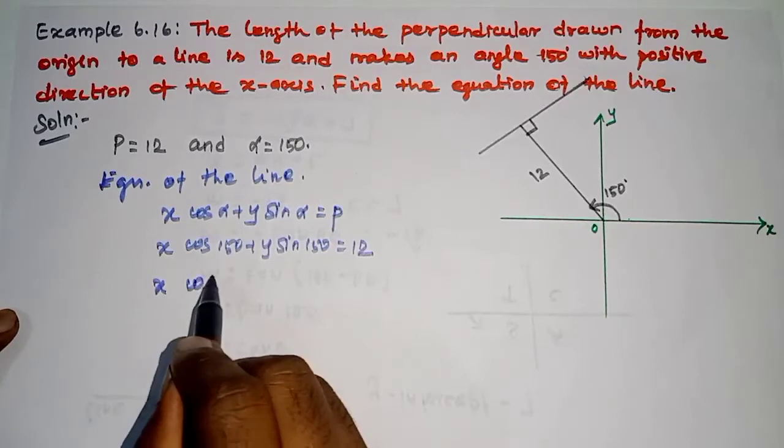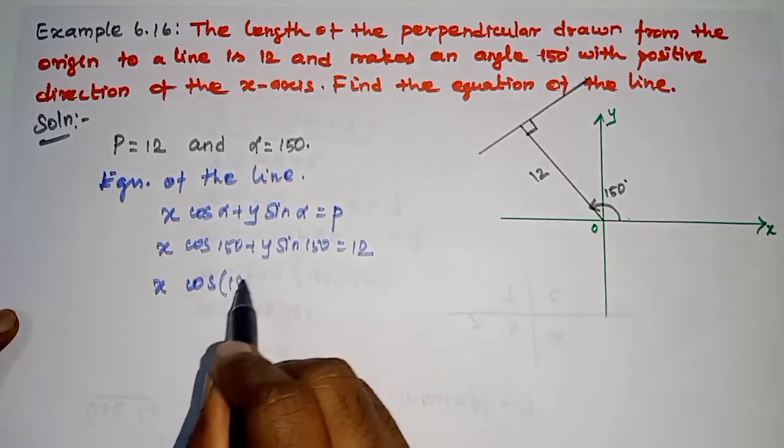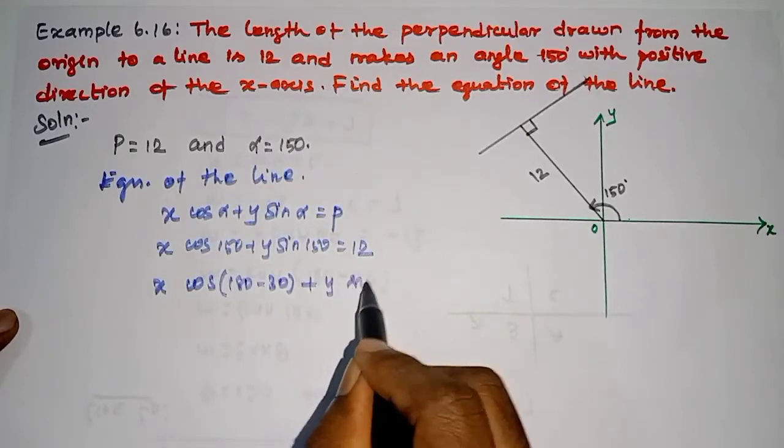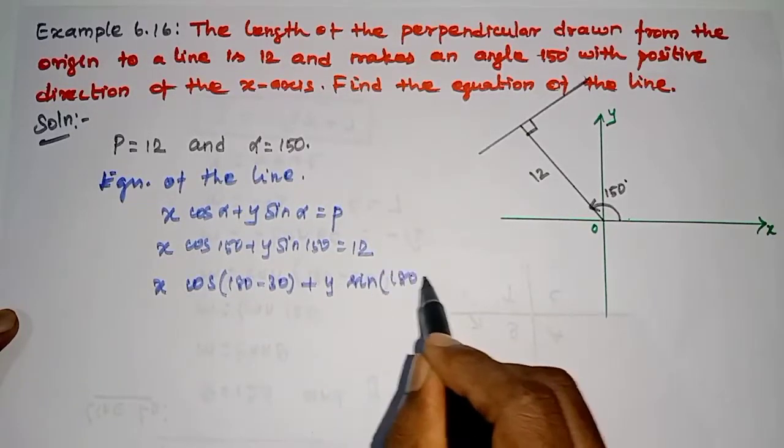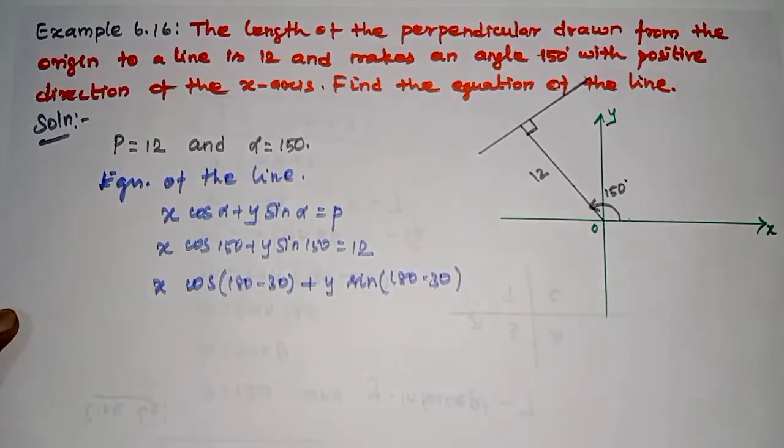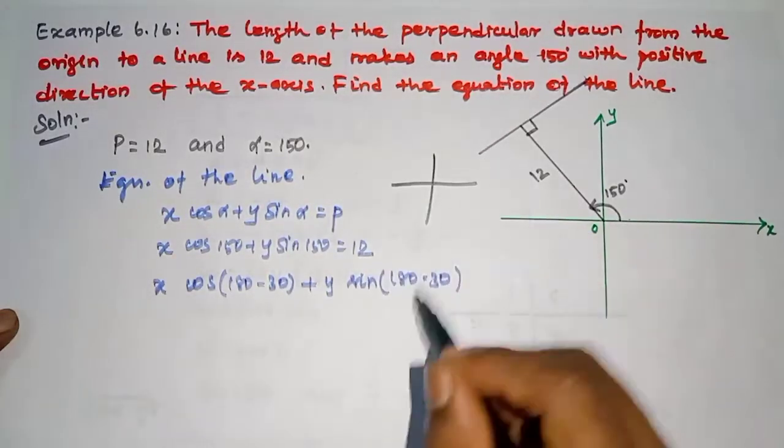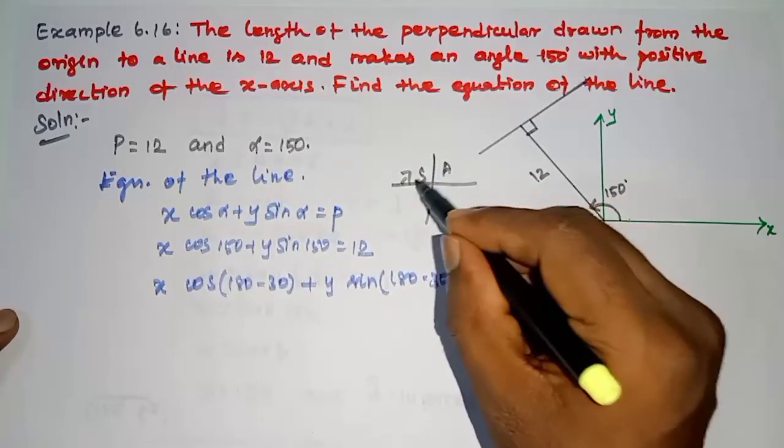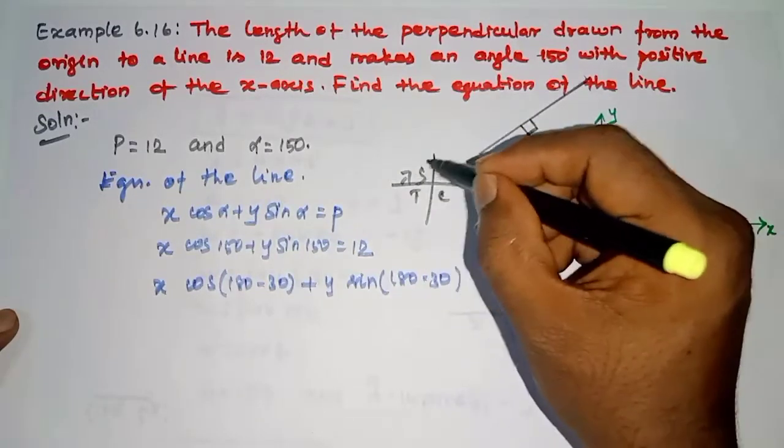x cos of 150, which is 180 minus 30, plus y sin of 180 minus 30. We know that 180 minus 30 is in the second quadrant. In the second quadrant, sin is positive.